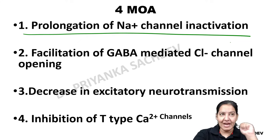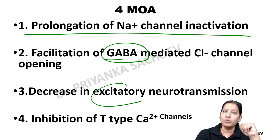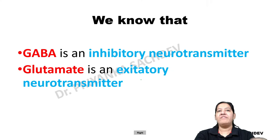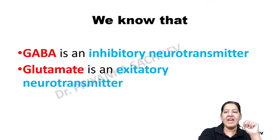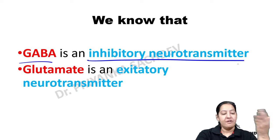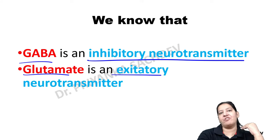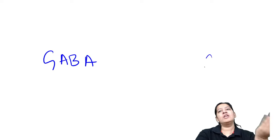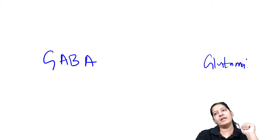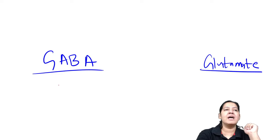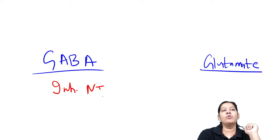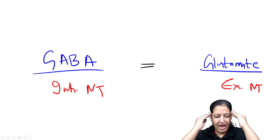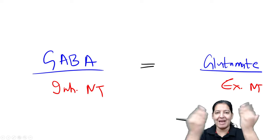Moving to the second mechanism: GABA and glutamate. In the brain we have two types of neurotransmitters — GABA, which is inhibitory, and glutamate, which is excitatory. Normally there is a balance between the two. During seizures there is an imbalance: the inhibitory GABA decreases and/or the excitatory glutamate increases, causing hyperactivity of a focal brain area.